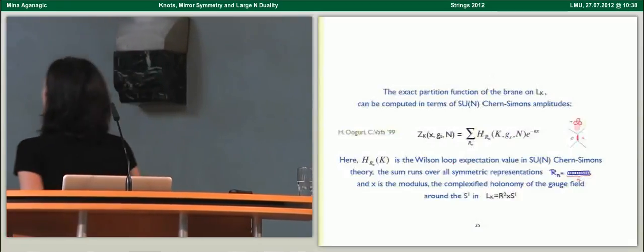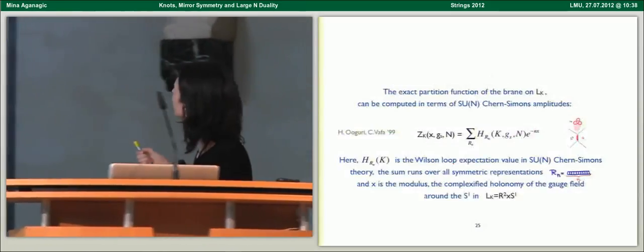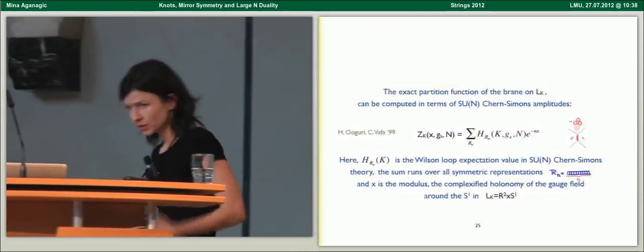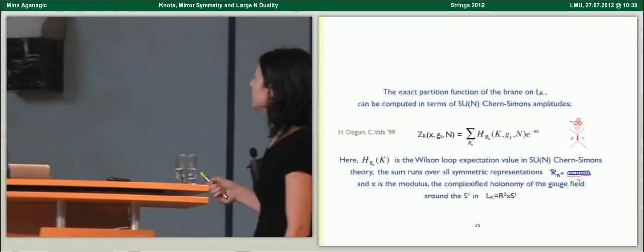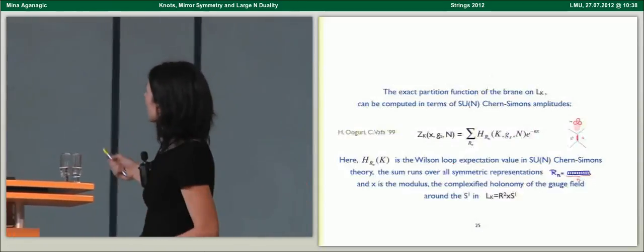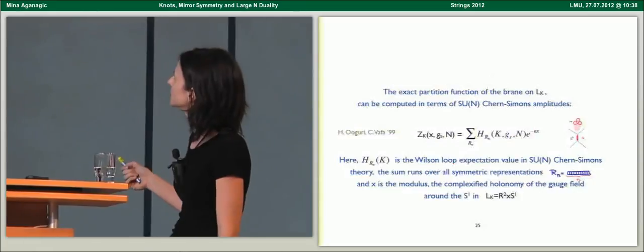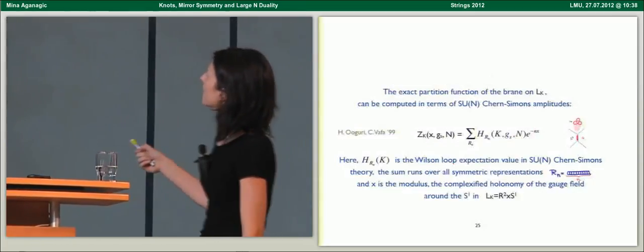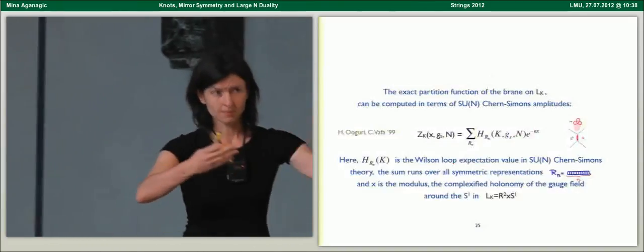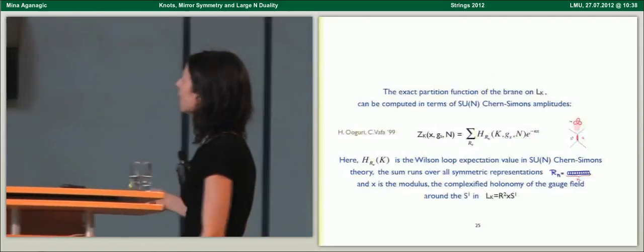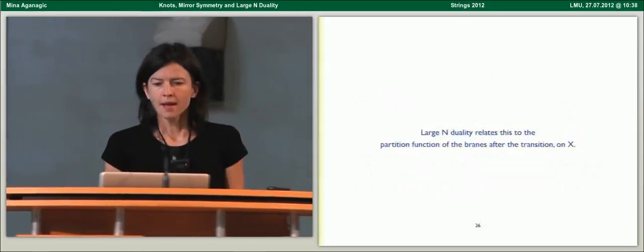Introducing additional Lagrangian branes associated to the knot corresponds to studying Chern-Simons theory with Wilson loops on the knot, as shown by Ooguri and Vafa in 1999. The partition function of a single brane on this Lagrangian is computable completely from Chern-Simons theory as a combination of Wilson loop expectation values of the knot, where one has to consider all symmetric representations of SU(N). X that arises is the modulus of the brane, related to the holonomy of the gauge field on the brane around S1.